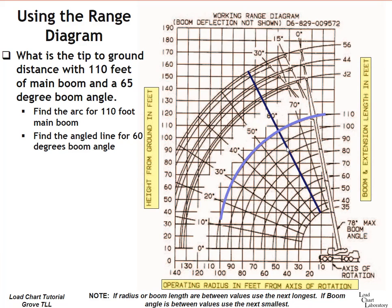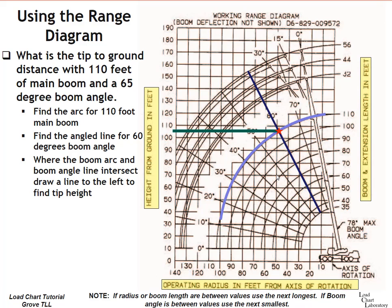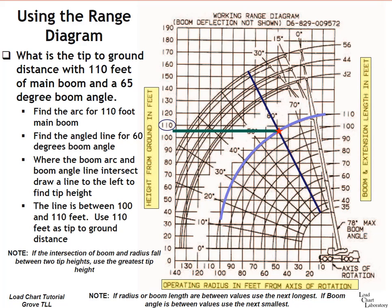So we have 110 degree arc, a 60 degree angled line. Now we have an imaginary line going from that intersection over to the left. And it falls between 100 and 110 feet. Like I said before, if you run into this situation, if it's between two tip heights, always use the highest or the largest distance. Between 100 and 110 feet, use 110 feet.